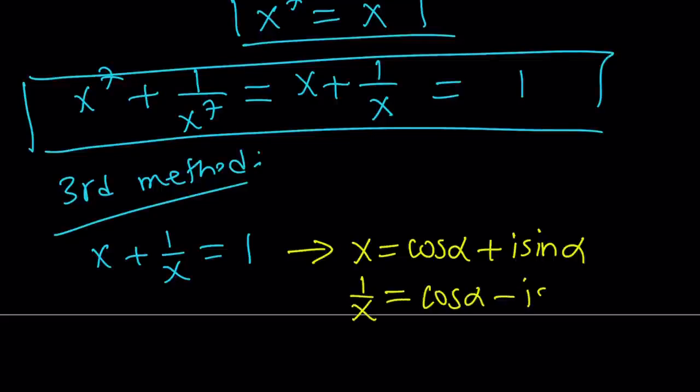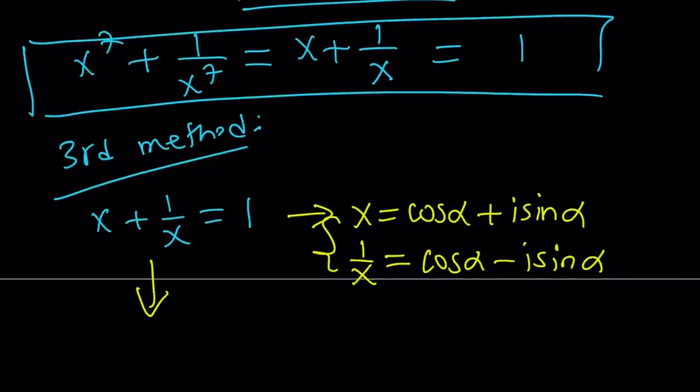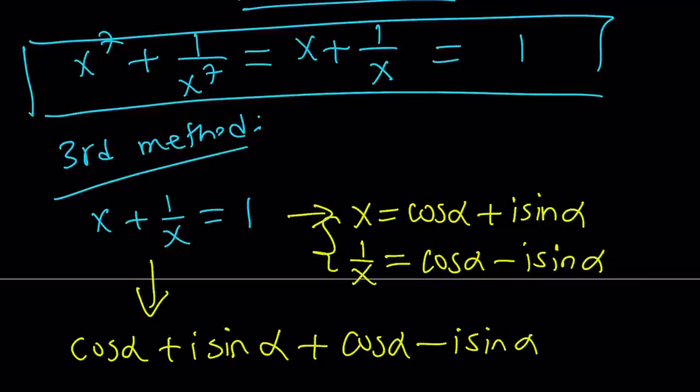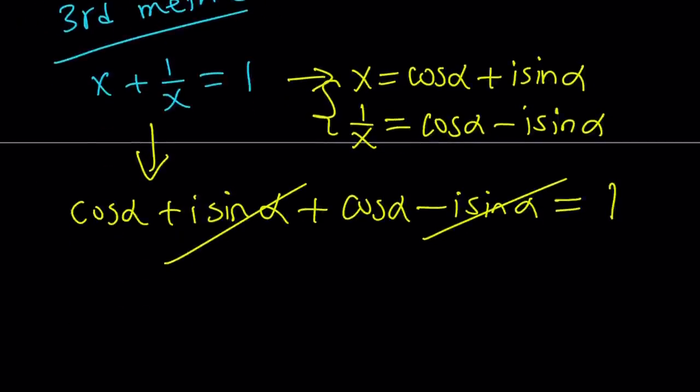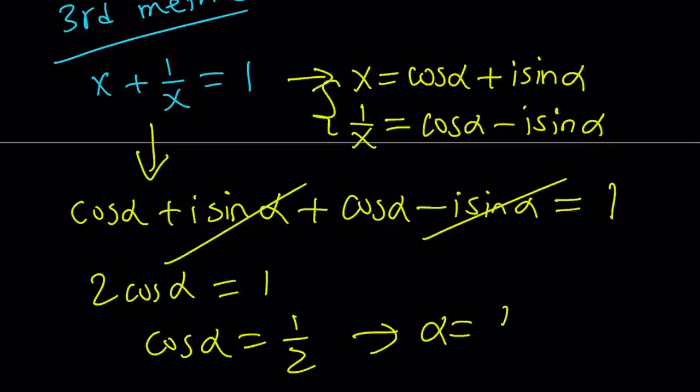You can easily check that if you multiply these two together, you're going to get 1 on the left-hand side and the right-hand side is going to give you, from difference of two squares, cosine squared minus i squared sine squared alpha, which is cosine squared alpha plus sine squared alpha, which equals 1. So this is beautiful. When you replace x with cosine alpha plus i sine alpha and 1 over x with cosine alpha minus i sine alpha, i sine alpha is going to cancel out. Cosine alpha plus cosine alpha is 2 cosine alpha. From here, cosine alpha equals 1 half. Good old 60 degrees or pi over 3 in radians.